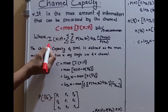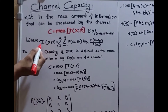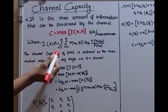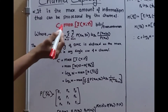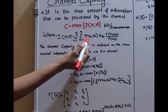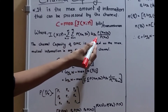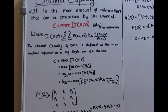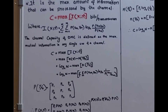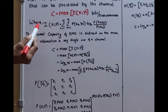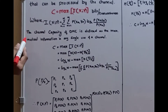The definition for mutual information: I(x,y) is equal to summation n equals 1 to N, m equals 1 to M, of P(xm, yn) times log of P(xm|yn) divided by P(xm). This is the equation for mutual information, which we have already discussed in previous classes.